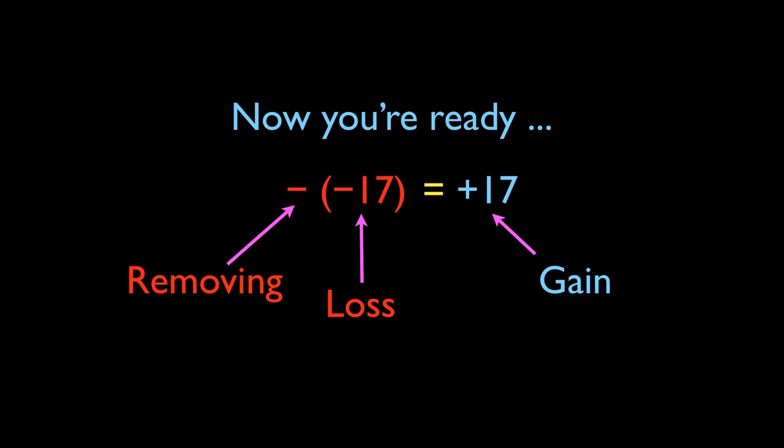Once again, think of this as removing, that leading negative sign as removing. And we said that a negative 17 is a loss. So if you think about a bank account, if you remove a loss, if you take away that loss, that would be equivalent to a gain.